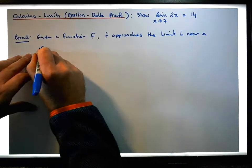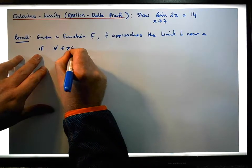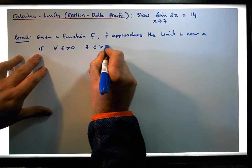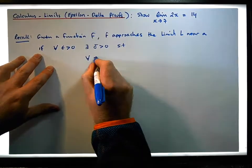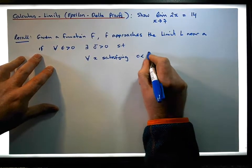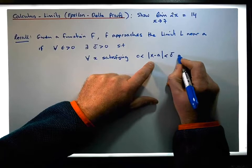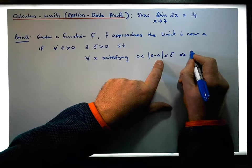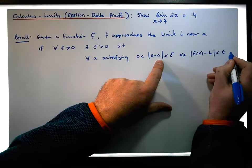...if for each and every epsilon greater than 0, there exists a delta greater than 0 such that for each and every x satisfying the condition that 0 is less than |x minus a| which is less than delta, this must imply that the function evaluated at x — f(x) minus L, minus this limit — must be less than epsilon.